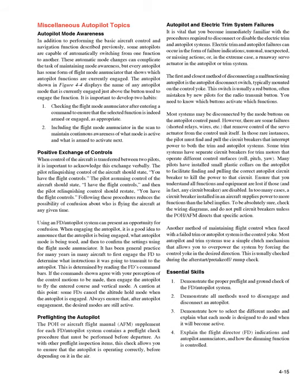It has been general practice to first engage the FD to determine what instructions it was going to transmit to the autopilot, as determined by reading the FD's command bars. If the commands shown agree with your perception of the control motions to be made, then engage the autopilot to fly the entered course and vertical mode. A caution: some FDs cancel the altitude hold mode when the autopilot is engaged. Always ensure that after autopilot engagement, the desired modes are still active.